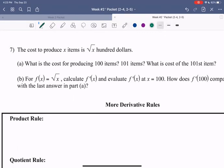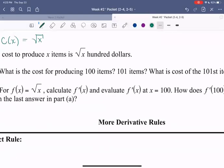So if we want to write the situation as a function, we could say c, the cost to produce x items, is equal to square root of x. Now part a says what is the cost for producing 100 items? So to compute that cost, we would just plug in 100 for x. c of 100 is equal to square root of 100.